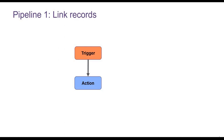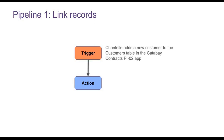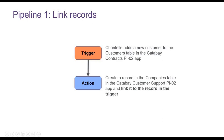You know that Chantel needs two pipelines. The first pipeline has two steps: a trigger and an action. The pipeline triggers when Chantel adds a new customer to the Customers table in the Catabay Contracts PI02 app. The pipeline then creates a new record in the Companies table in the Catabay Customer Support PI02 app. Within the action, Chantel links the record back to the record in the trigger. Let's look at the two apps and help Chantel build the first pipeline.